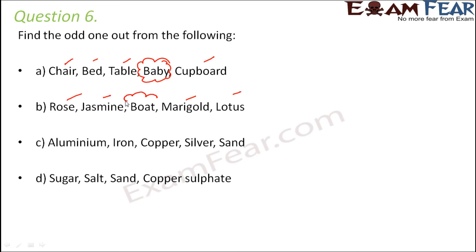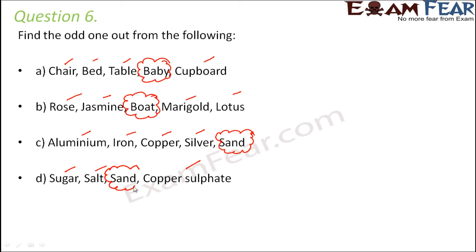Aluminium, iron, copper, silver, sand — aluminium, iron, copper, and silver are all metals, so sand is the odd one out. Sugar, salt, sand, copper sulphate — sugar, salt, and copper sulphate are all soluble in water, but sand is insoluble, so sand is the odd one out here as well.